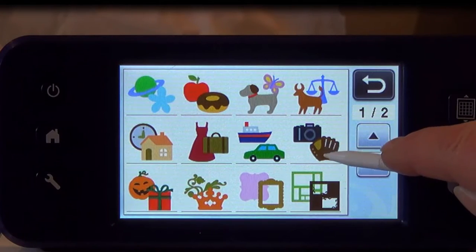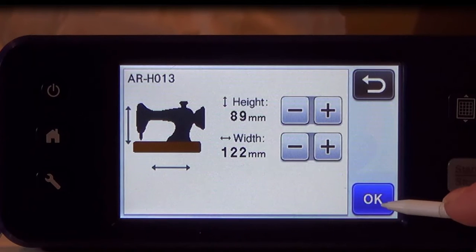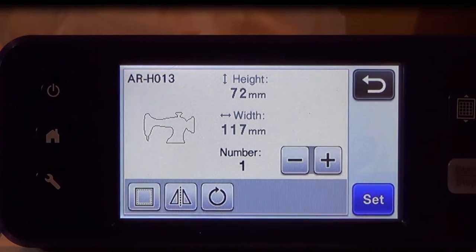Choose a submenu with the baseball mitt and in there there's a sewing machine. Select the sewing machine and press OK. Press the first part, press OK, and then press set.